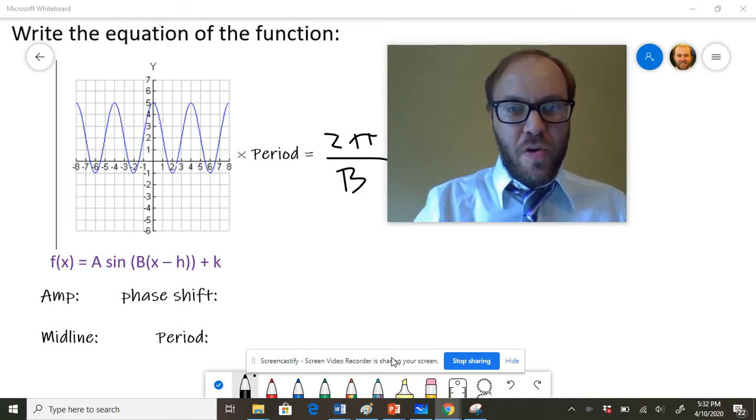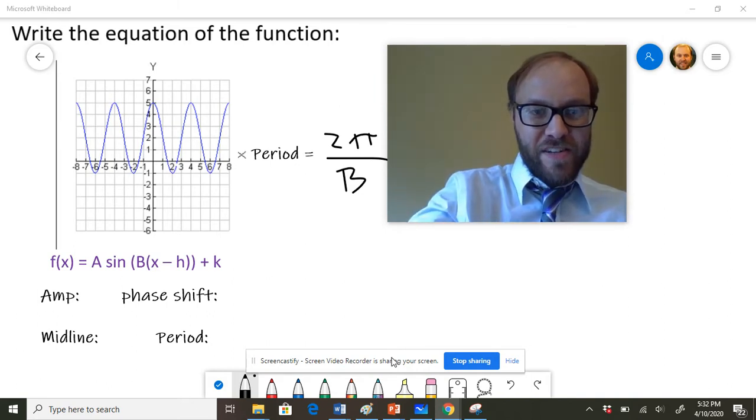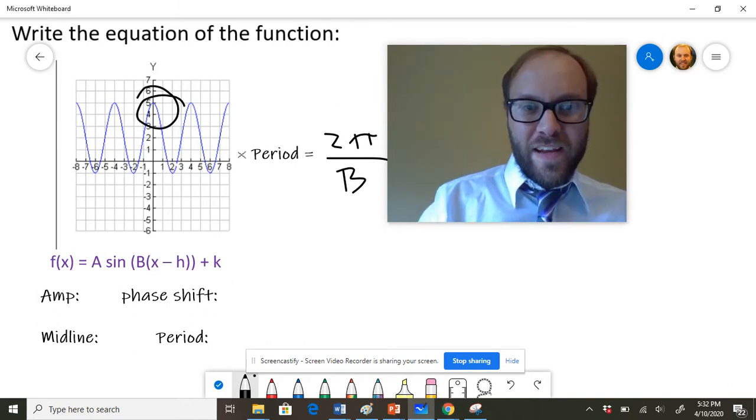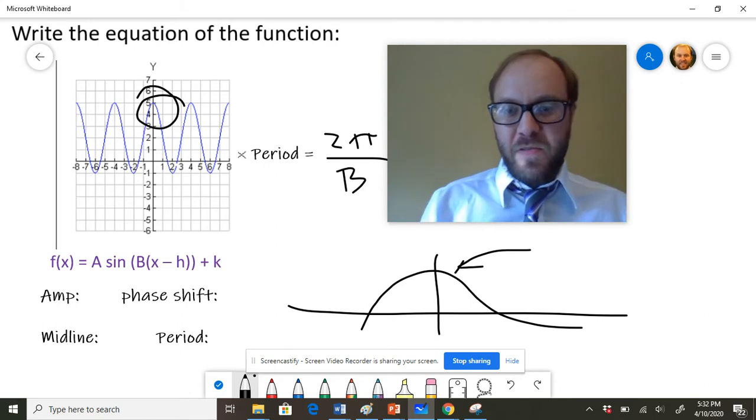First of all, notice that the function actually maxes out where x is equal to zero, and that looks a whole lot more like a cosine function. The cosine function hits a maximum when x is equal to zero.